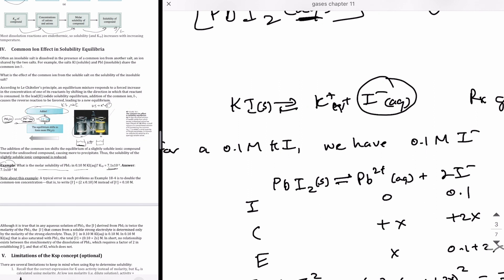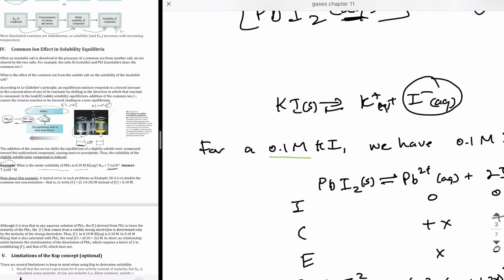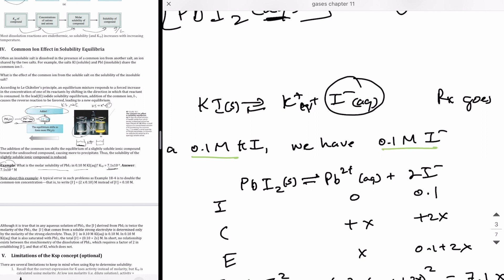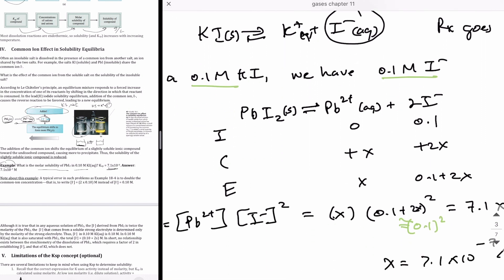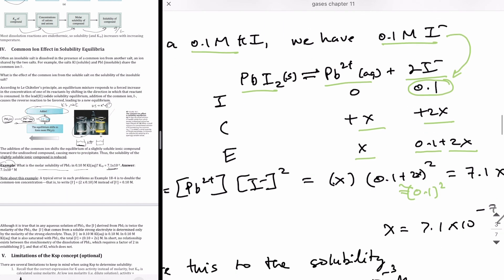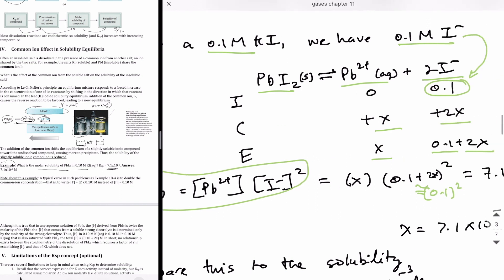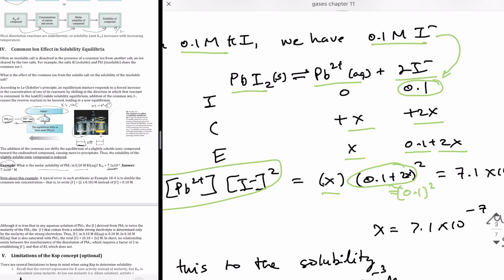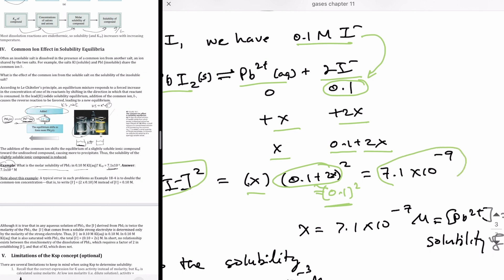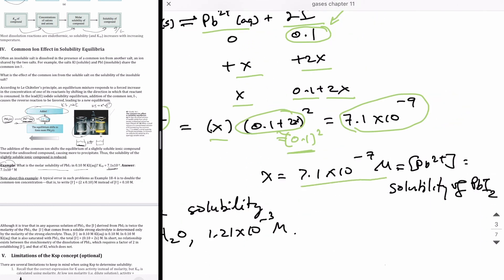We differentiate the soluble salt — potassium iodide — which dissociates completely. With 0.1 molar KI, we get 0.1 molar iodide ion. For the equilibrium of PbI₂, it produces Pb²⁺ and 2 I⁻. Initially, we already have 0.1 molar iodide, so the ICE table starts at 0 and 0.1. At equilibrium we have x for Pb²⁺ and 0.1 + 2x for iodide. Setting up the Ksp expression: x(0.1 + 2x)², simplified using the small-x approximation to x(0.1)², and solving gives x = 7.1 × 10⁻⁷ molar.